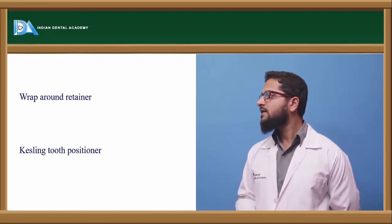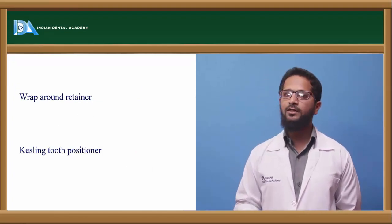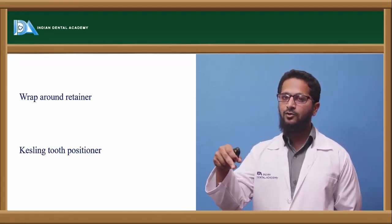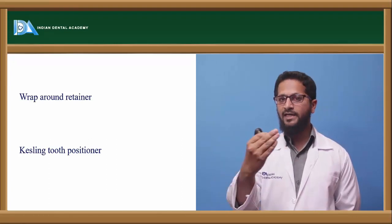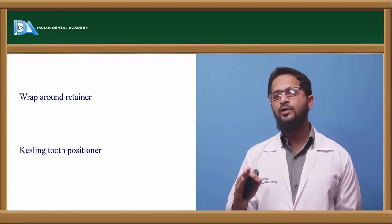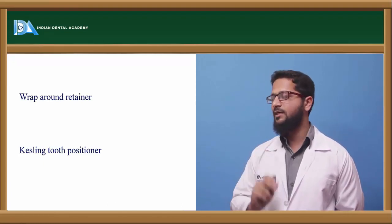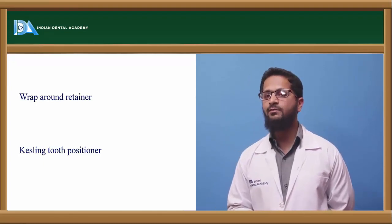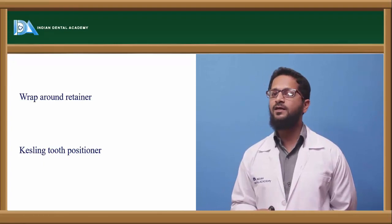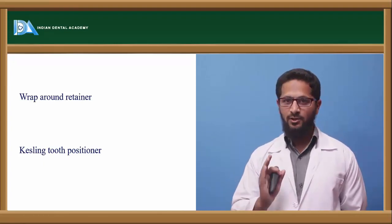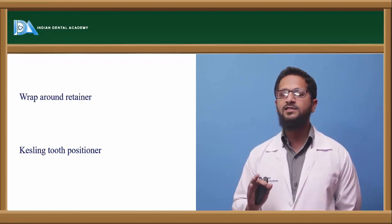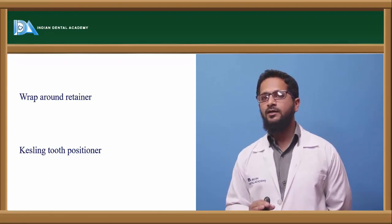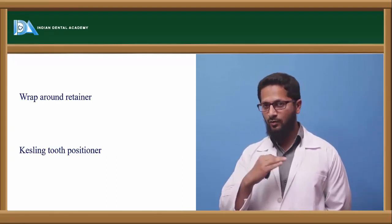The wrap-around retainer is similar to the clip-on retainer or spring aligner, but the labial wire extends to the last erupted tooth, curves, and is properly adapted over the lingual aspect of all the teeth — unlike the clip-on which extends only to the canine. The Kesling tooth positioner, given by H.D. Kesling, is made of highly thermoplastic rubber-based material that covers the occlusal area labially and lingually, extending one to two mm over the gingival margin.